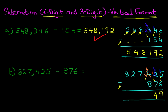Moving on to the hundreds, we've got 3 minus 8. Because 3 is smaller than 8, we have to take 1 from the digit on the left. We've had to take 1 from each digit on the left every time in this example. Let's cross out 7. 7 minus 1 is 6, and the 1 we have taken from here we're going to add to the 3. So the hundreds column now reads 13 minus 8. 13 minus 8 is 5.